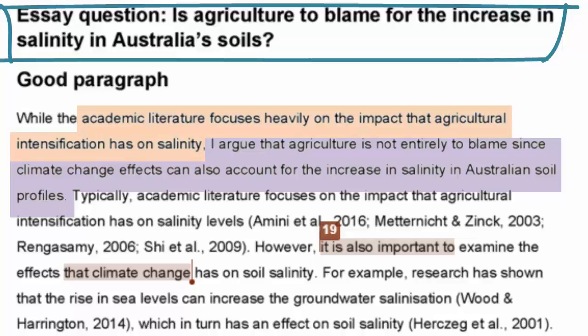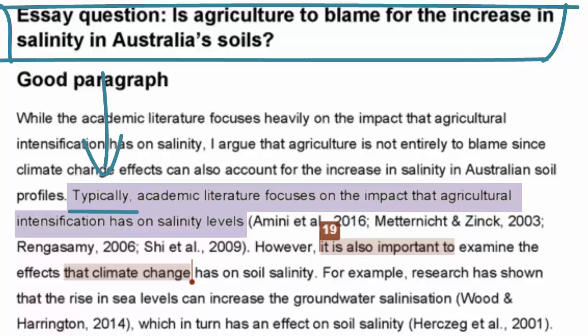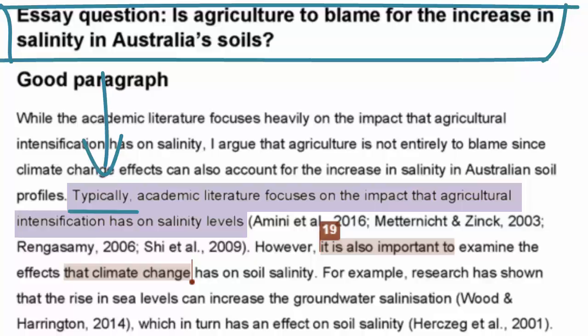Also, the student has used more paraphrasing and phrases to show their critical analysis. This makes their writing clearer and more persuasive. For example, when they make the point that typically academic literature focuses on the impact that agricultural intensification has on salinity levels, they use the word typically to show that this is their observation of a general trend in the literature. The word typically signals that the student is critical of this trend, because it indicates that there are other studies or ideas that are different to this trend.